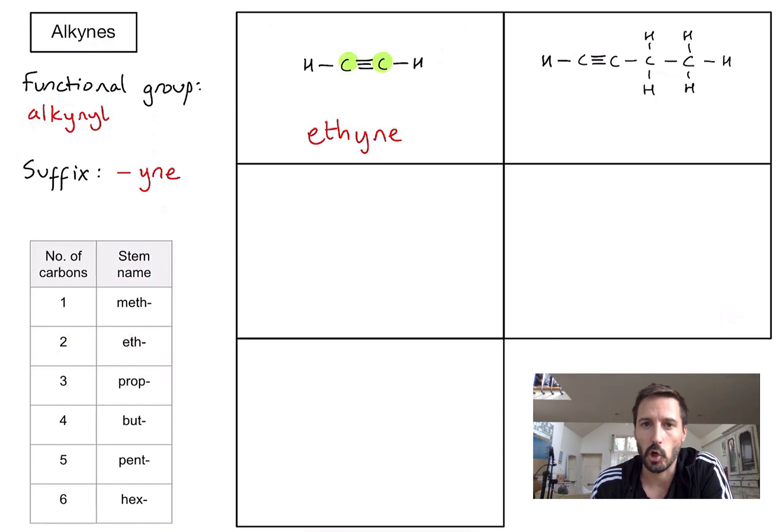Second example, slightly longer one. Again what are we going to do first? Well we're going to spot the functional group. There's my triple bond at the beginning of the molecule. And let's then count the number of carbons in my main chain.